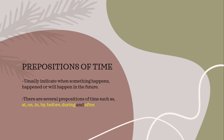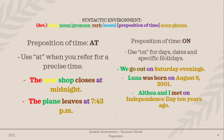There are eight types of prepositions, and first in the list is prepositions of time. It indicates when something happens, happened, or will happen in the future. There are several prepositions of time, such as at, on, in, by, before, during, and after.